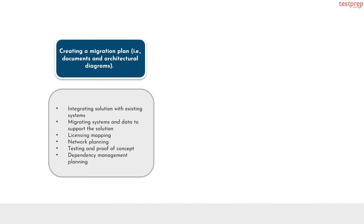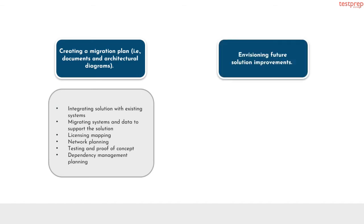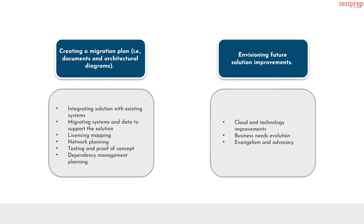Number 4, creating a migration plan — documents and architectural diagrams. It contains: first, integrating solution with existing systems; second, migrating systems and data to support the solution; third, licensing mapping; fourth, networking planning; fifth, testing and proof of concept; sixth, dependency management planning. Number 5, envisioning future solution improvements. It contains: first, cloud and technology improvements; second, business needs evolution; third, evangelism and advocacy.